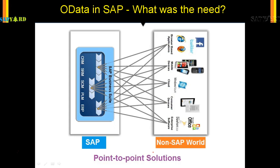This point-to-point solution was not at all feasible and had many demerits. There was poor scalability, it increased the system landscape complexity, and as you can see from this interface design, it also increased the administration effort. Therefore, this point-to-point solution was never a good solution. That's why they came up with OData service, which will be shown in the next slide.